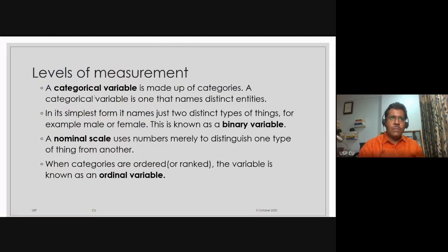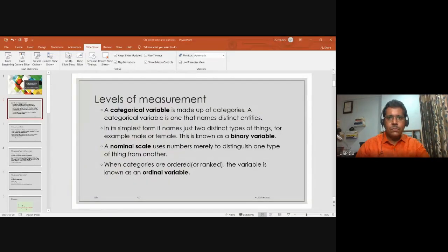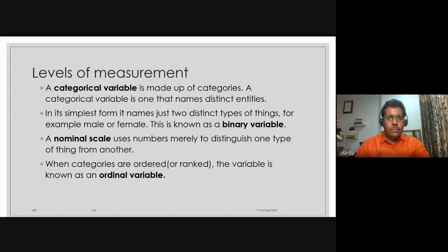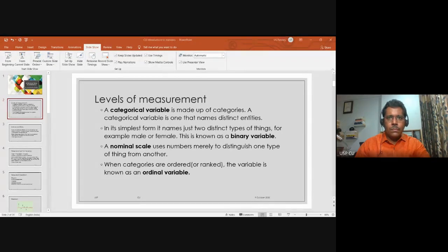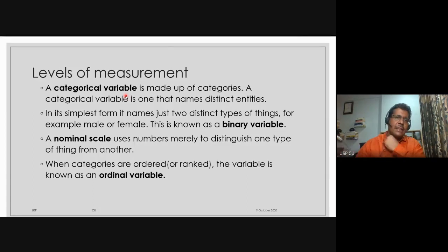Earlier we've spoken about levels of measurements — what is a categorical variable, what is a binary variable, what is a nominal scale, and what is an ordinal variable. A categorical variable is made up of categories; it is just the name that distinguishes entities from each other. It could be states, people, or your IPL teams. In the simplest form, categories can be of two types — male or female, yes or no. When they are of just two types, they are binary variables.